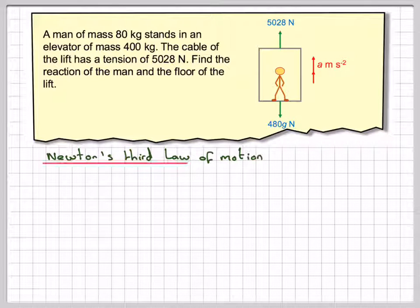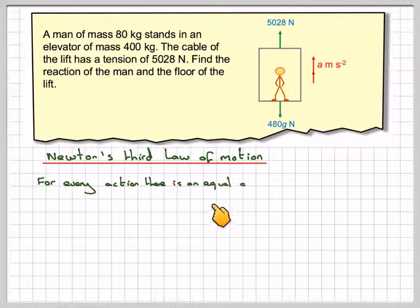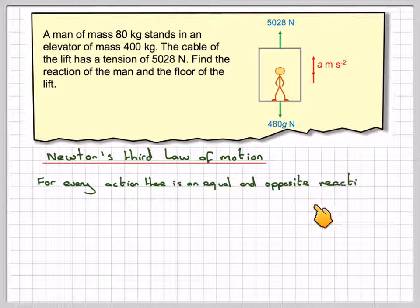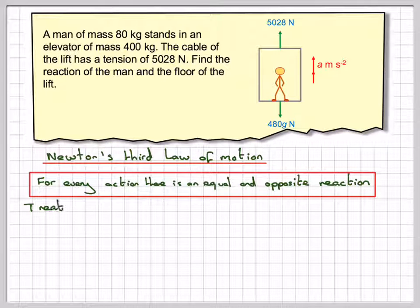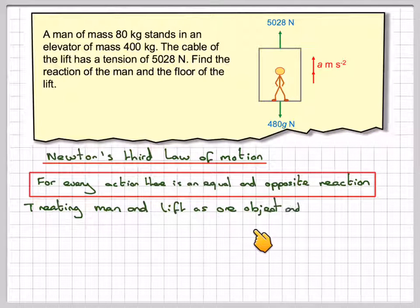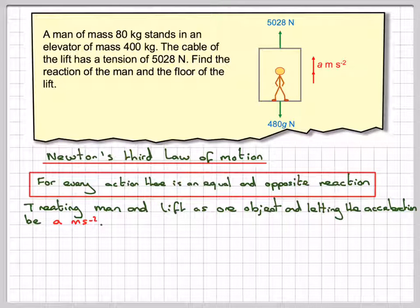Newton's third law of motion states for every action there is an equal and opposite reaction. Treating the man and the lift as one object and letting the acceleration be A, by treating it as one object the reaction forces between the man and the floor are internal and can be ignored.